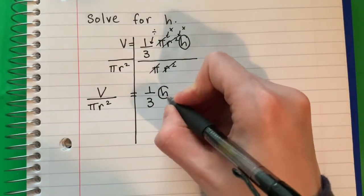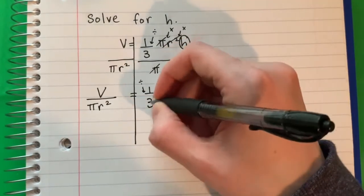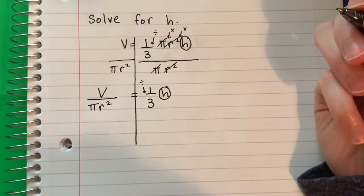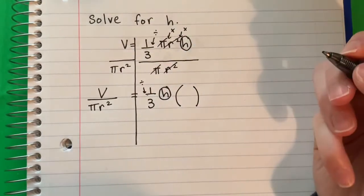I want h alone. What is with h, que está con h, is divided by 1/3. This is divide. The opposite of divide is multiply. So I'm going to do parenthesis for multiply.